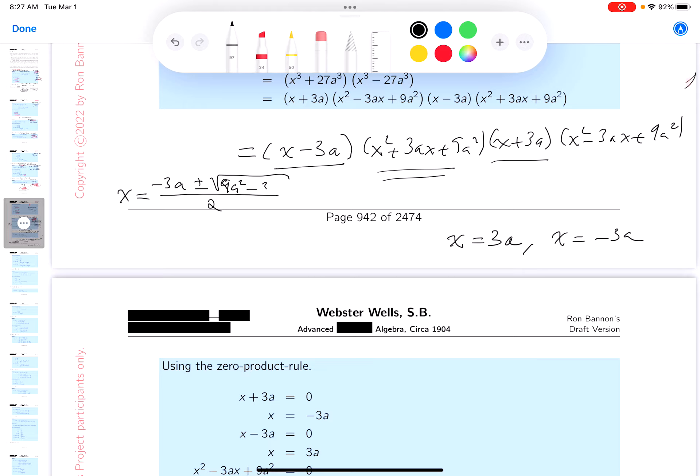Minus 4ac. So minus 36a². And what do you get there? X equals minus 3a plus or minus. This is 2. Well, what would you get there? You would get minus 27a². So I'm going to say, I'm going to write that down for you.